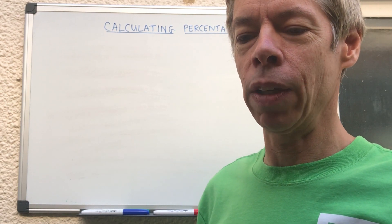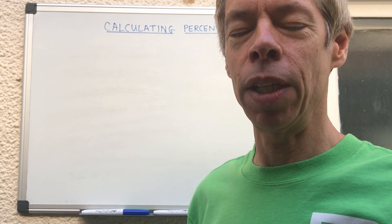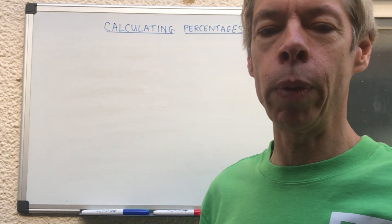At the moment in the maths GCSE there is a non-calculator paper, and obviously in things like SATs and 11 plus you're not allowed a calculator. So how can we work out percentages without a calculator?